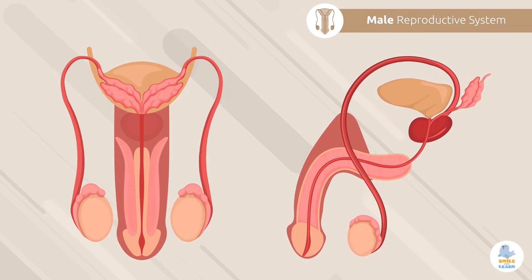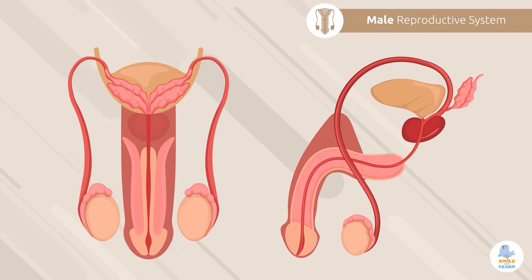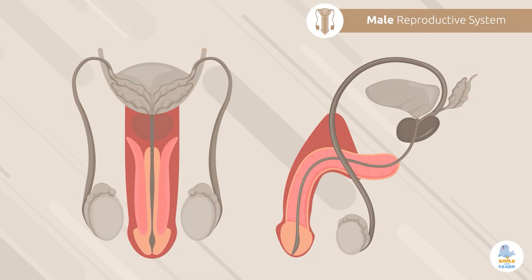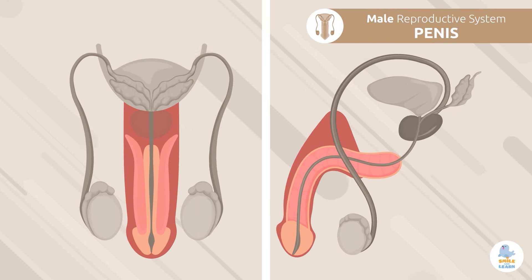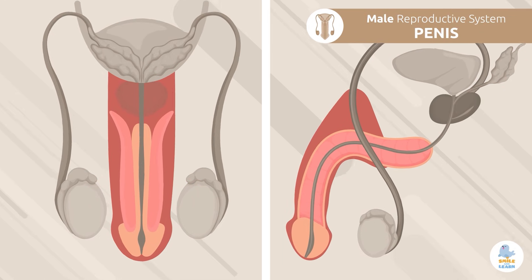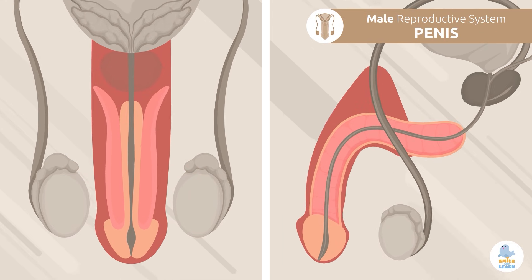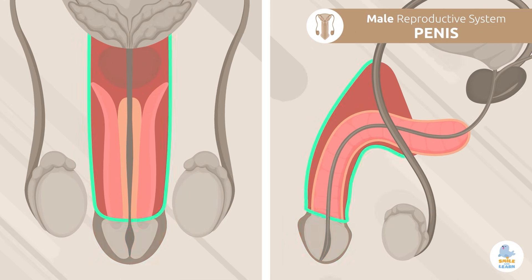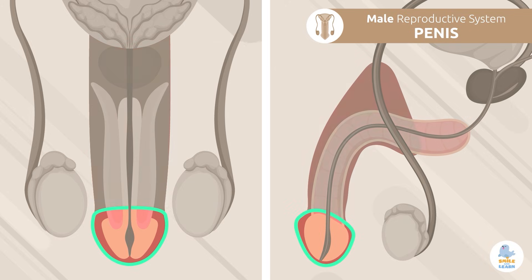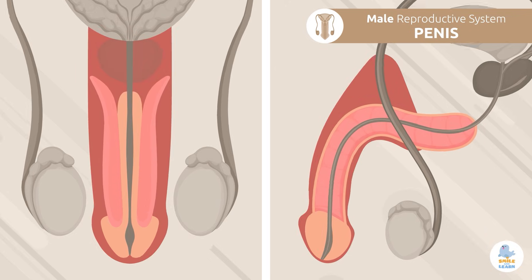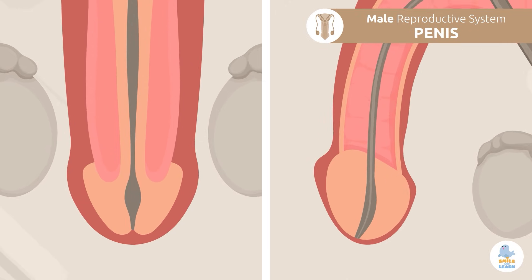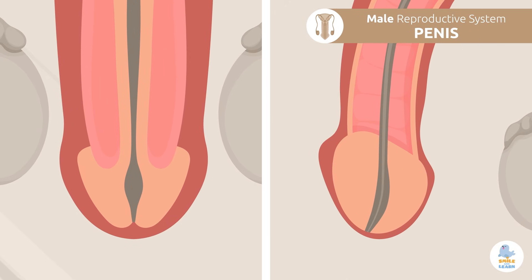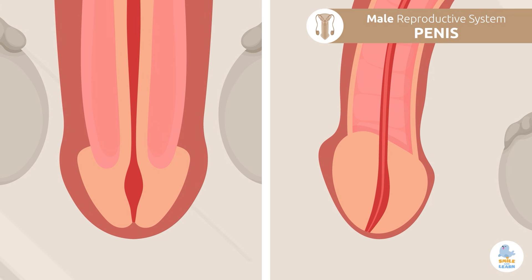Let's find out what each one is for. Penis: the penis consists of two parts, the shaft and the glans, and it has an opening where semen and urine exit outside the body, called the urethra.